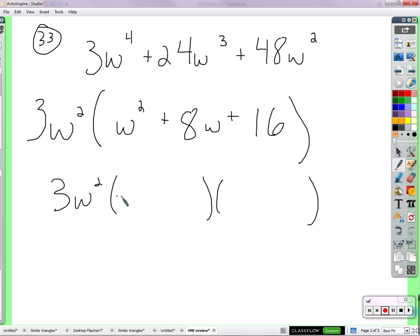So, I know I can just write out some parentheses, w in each one of those. I know that w times w will give me w squared. This number times this number needs to give me 16, while adding together to give me eight. I think what I'm going to figure out is four and four. Four times four is 16. Four plus four is eight.